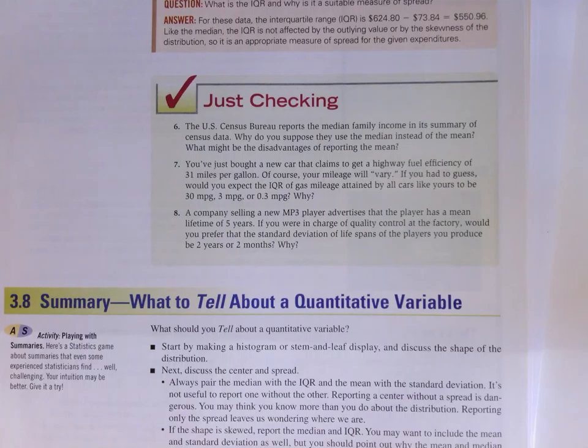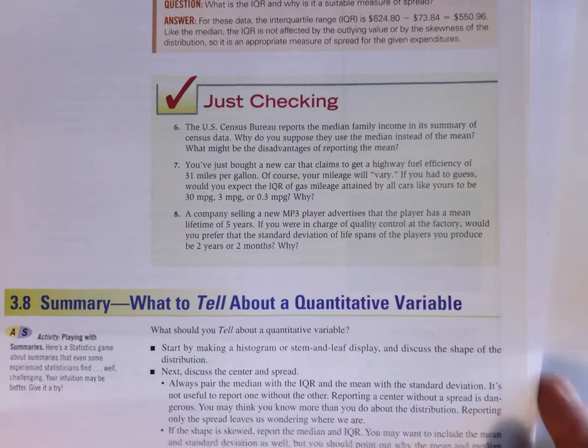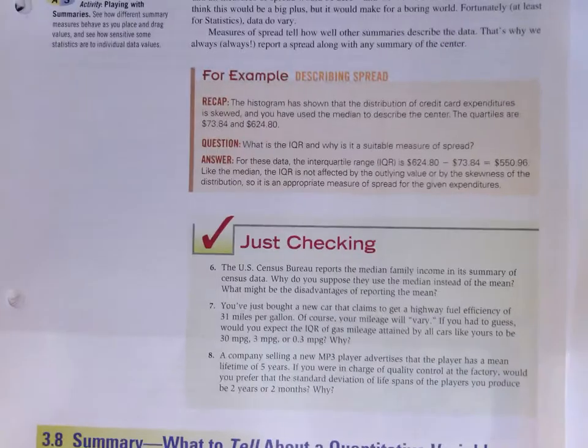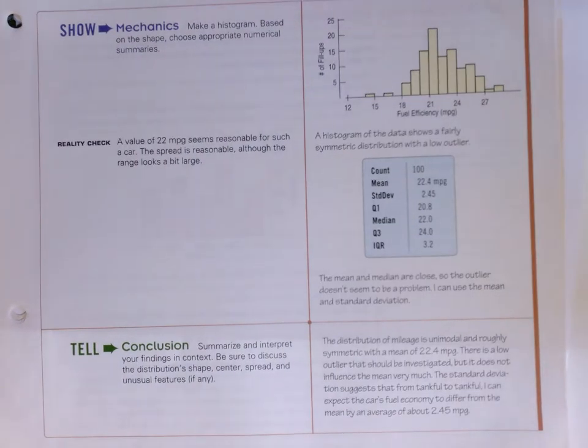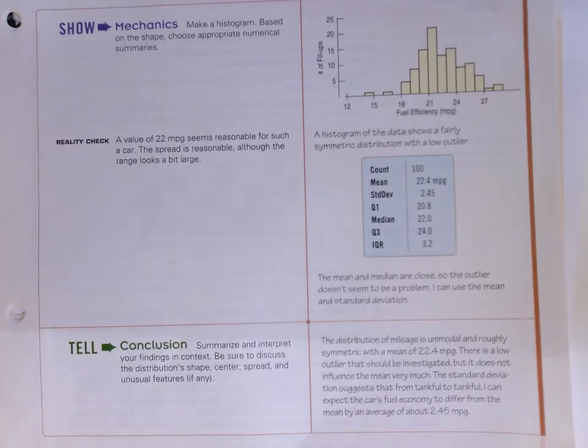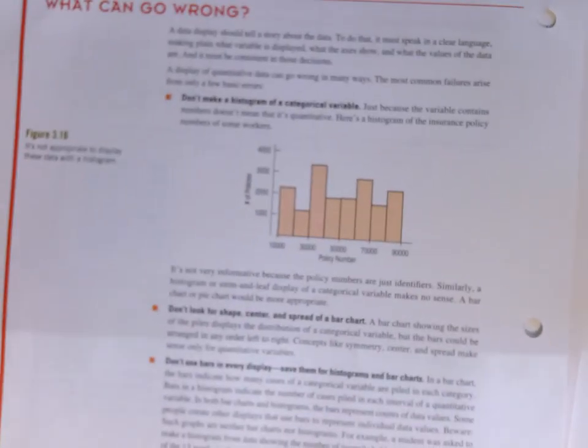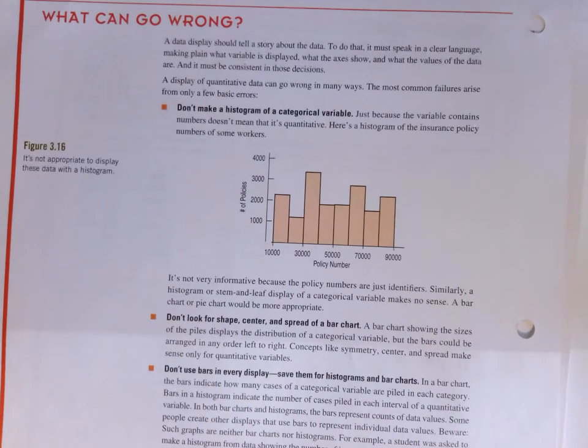Definitely, as always, encourage you to be reading through and working through the just checking, making sure things are set. And then to close, the idea of what to tell people about a quantitative variable. How would you summarize things? It really comes down to this idea of center, spread, and shape. We don't want multiple measures. We don't want redundancy. We want people to kind of be regenerating a picture. Here's an example of that and a step-by-step example.